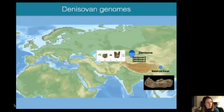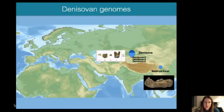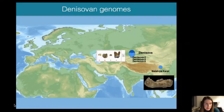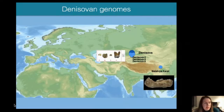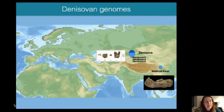Initially we had just the one finger bone, but subsequently we have sequenced more limited amounts of nuclear and mitochondrial DNA from a handful of specimens — all currently from this cave: three teeth and another bone — showing that Denisovans lived for an extended period of time in this region. Very excitingly, earlier this year a jaw bone was discovered on the Tibetan plateau in China. Based on the morphology of the teeth as well as on some proteomic data, this has been assumed to also be a Denisovan, making it the first Denisovan outside of Denisova cave to be discovered, and suggesting that Denisovans were inhabiting rather high-altitude environments like the Tibetan plateau.